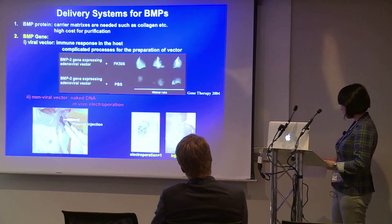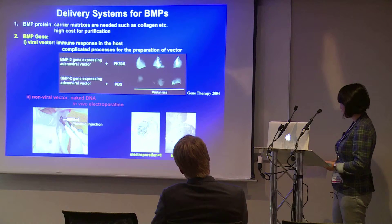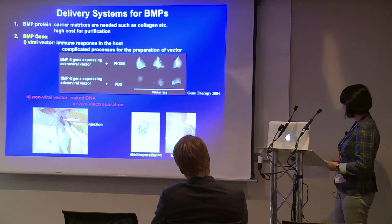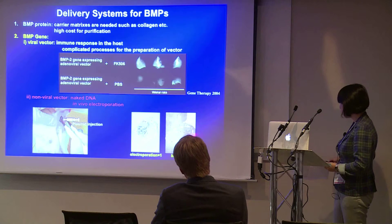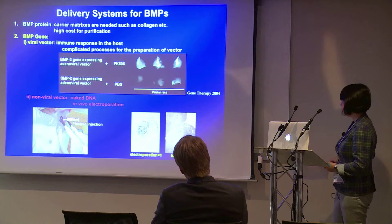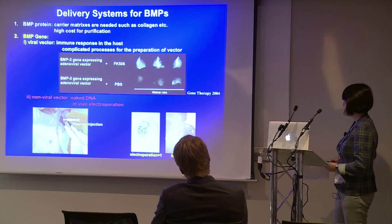This shows LacZ expression: with non-viral vector injected and electroporation, there are many beta-galactosidase stained fibers. But this muscle was treated by injection only without electroporation — there are far fewer stained fibers.